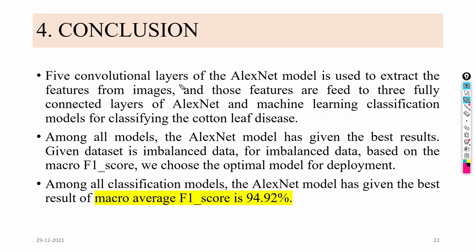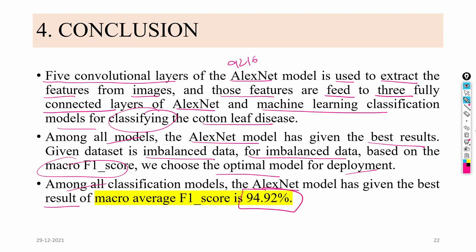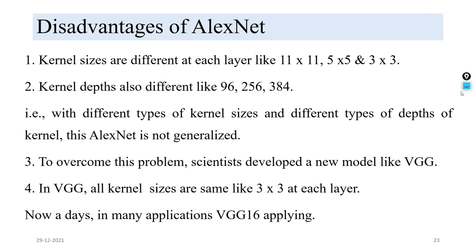In conclusion, the five convolutional layers of AlexNet extract 9216 features from the images. These features are fed to the three fully connected layers and machine learning classification models for classifying cotton leaf diseases. Among all models, AlexNet gives the best result. Since the dataset is imbalanced, macro F1 score is used to choose the optimal model, and AlexNet achieves the best result of 94.92%.